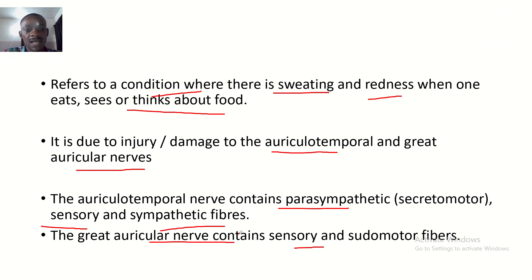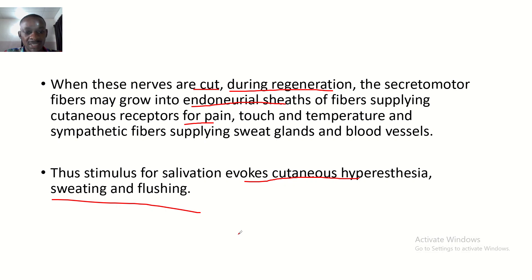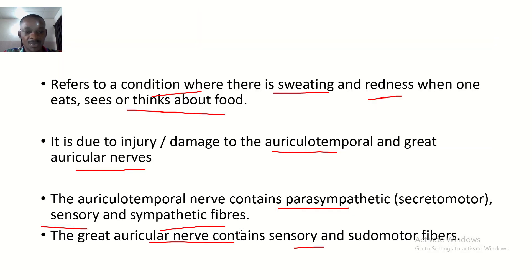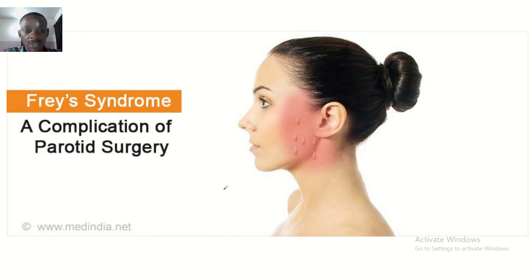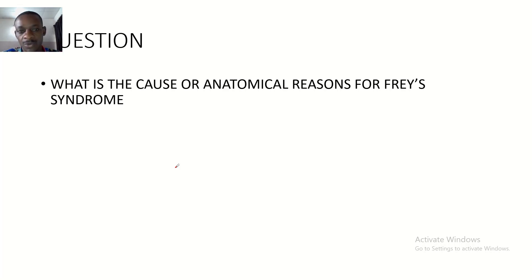These are the anatomical bases for Frey's syndrome. The main content covers the auriculotemporal nerve fibers and the great auricular nerve fibers. The cause is damage or a lesion to these nerve fibers, and the anatomical reasons have been explained. See you in the next tutorial.